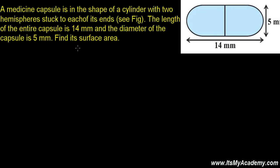Let's discuss another question regarding the medicine capsule. A medicine capsule is in the shape of a cylinder with two hemispheres stuck on each of the ends. The length of the entire capsule is 14 mm — that is the total length — and the diameter of the capsule is 5 mm. We need to find its surface area.